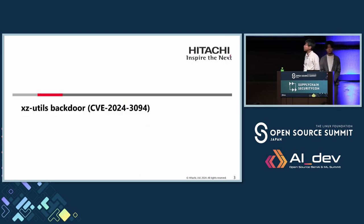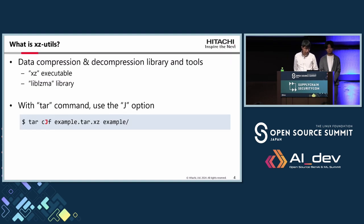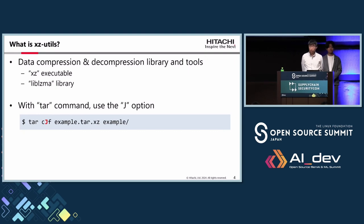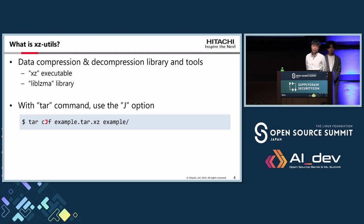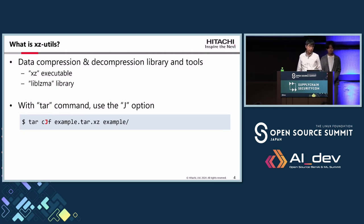Let's go into the details of this XZ Utils backdoor, beginning with XZ Utils itself. If you are using the Linux CLI, you may have used this tool. It's a data compression and decompression library and tool. It contains the XZ executable and the library liblzma. The most common use case is with the tar command — using the capital J option, you can compress a tar archive or decompress .tar.xz files.